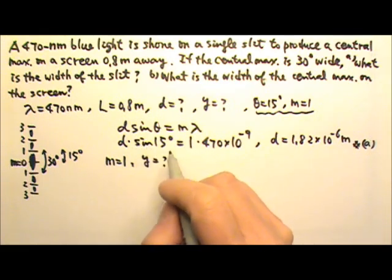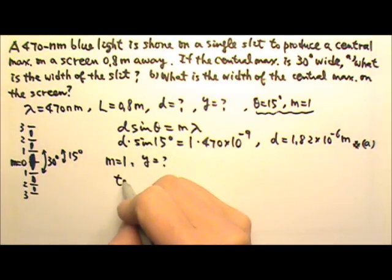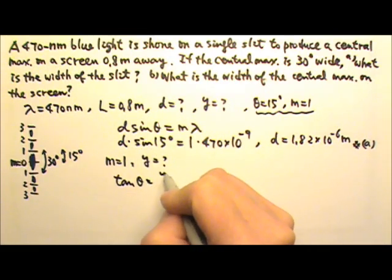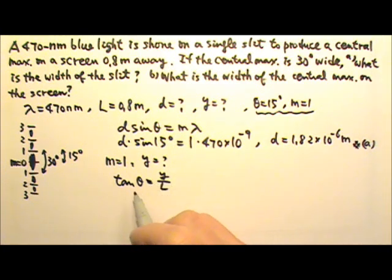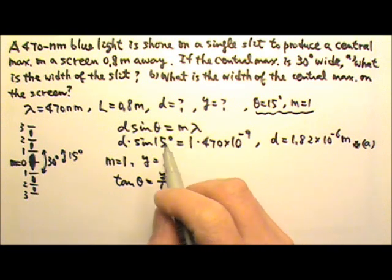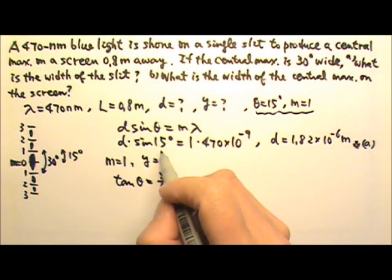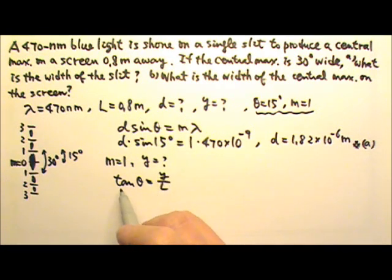So I know that tan theta equals to Y over L. I can use sine theta equals to Y over L if the angle is small. But right now the angle is 15 degrees, which is not very small. That means I have to use tan theta equals to Y over L.